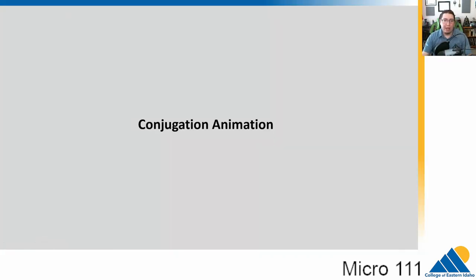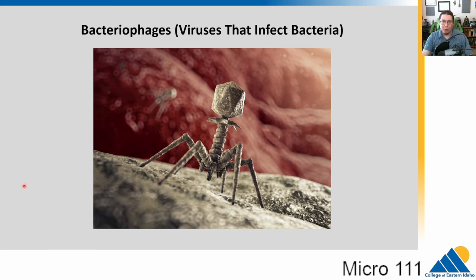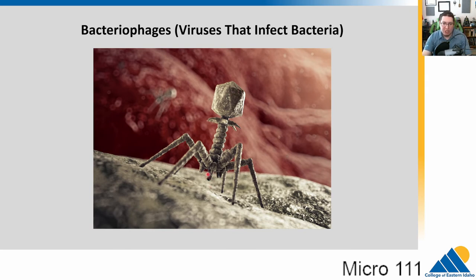On to our third mechanism of genetic variability: transduction. To understand it, we first need to talk about bacteriophages. Viruses are non-living and must infect a host cell, using its machinery to replicate. Bacteriophages are a class of virus that infects bacteria. These phages look like little lunar landers — a protein cap encapsulating a genome of DNA or RNA, with a little injector that injects genetic material into the bacterial cell like a syringe.